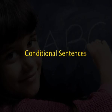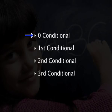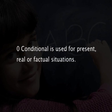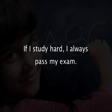Now let us look at conditional sentences. There are four conditionals: zero conditional, first conditional, second conditional, and third conditional. Zero conditional is used for present real or factual situations. For example: 'if I study hard, I always pass my exam.' The first part, 'if I study hard', is a present simple if-clause expressing a condition. The second part, 'I always pass my exam', is the main clause giving the result, also in present simple.